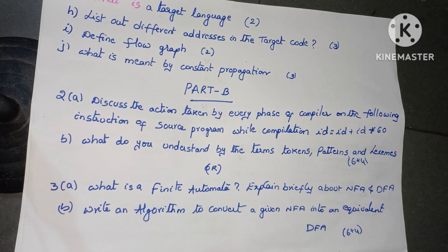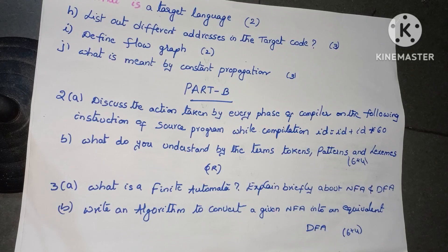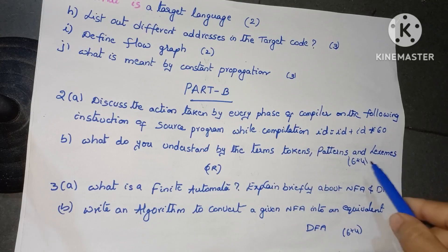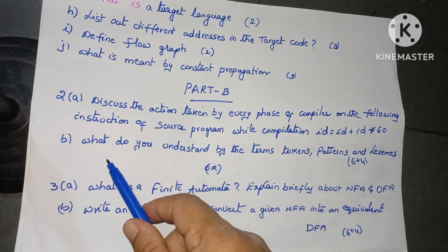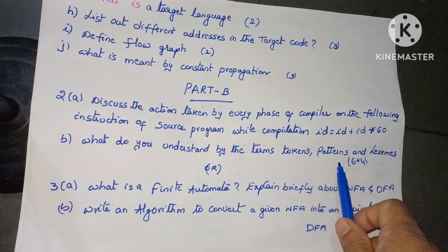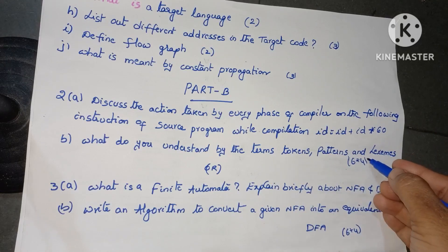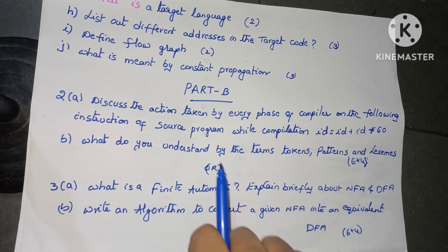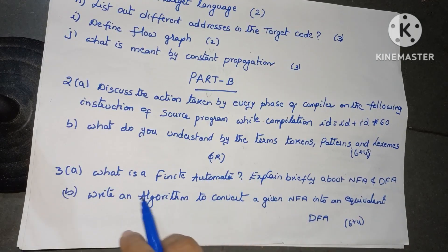Next, Part B essay type questions. Question 2A: discuss the actions taken by every phase of the compiler on the following instruction — while compilation, ID = ID + ID * 60. This is a 6 marks question. B bit: what do you understand by the terms tokens, patterns, and lexemes, for 4 marks. Total 10 marks with internal choice.